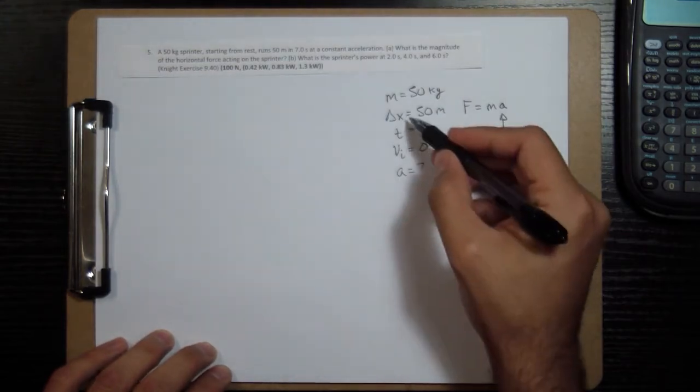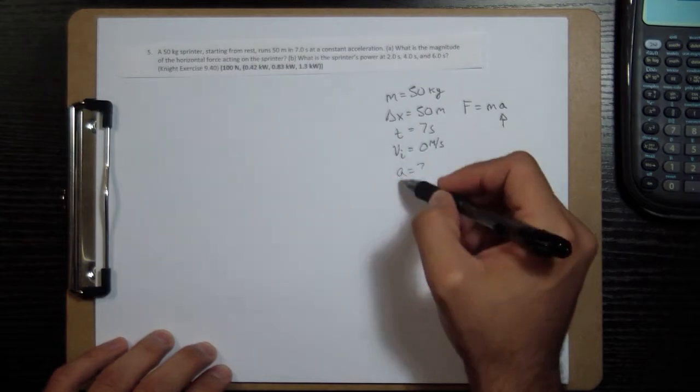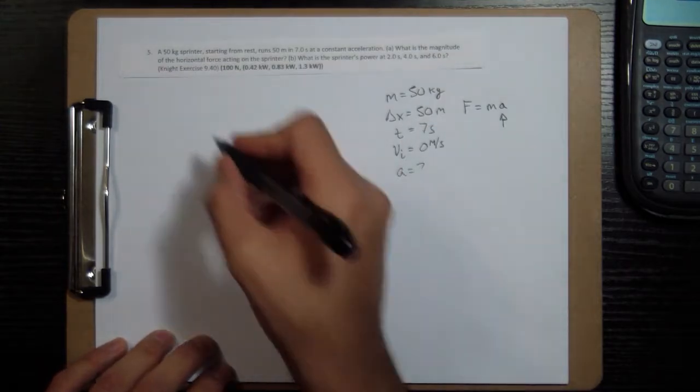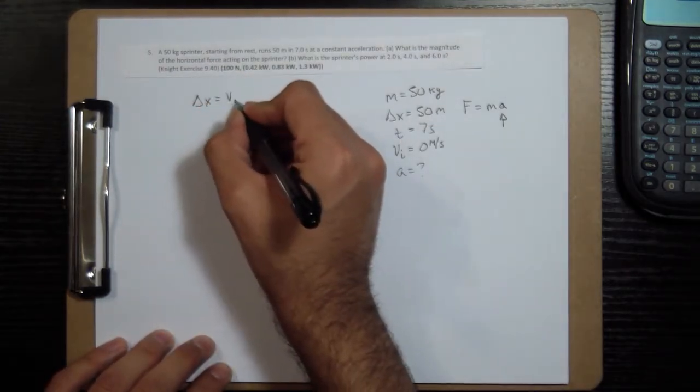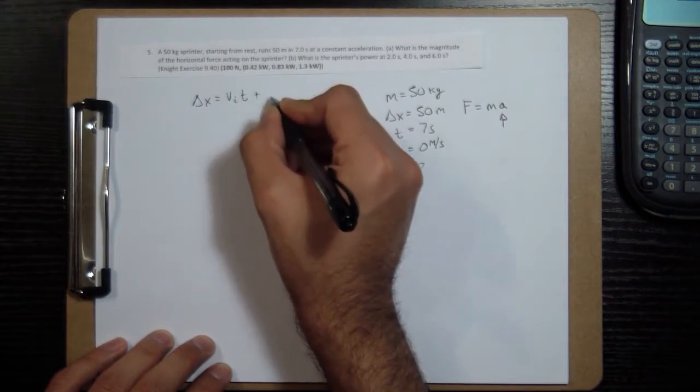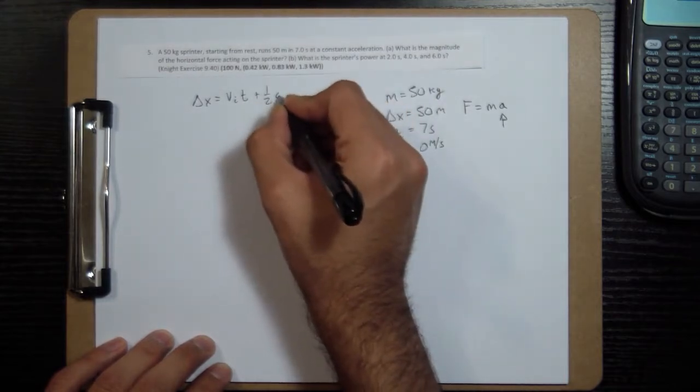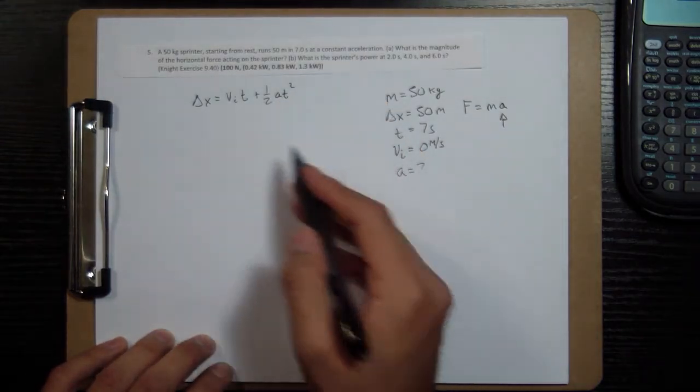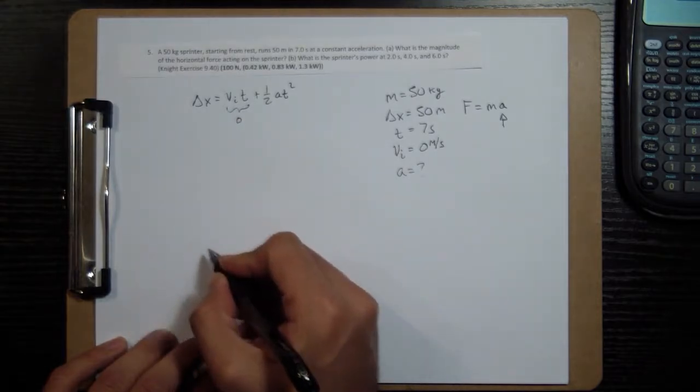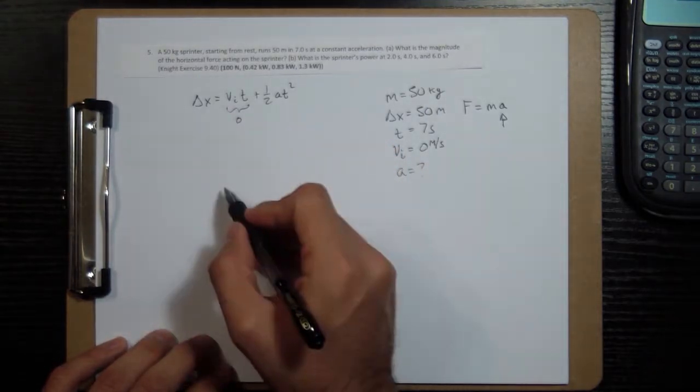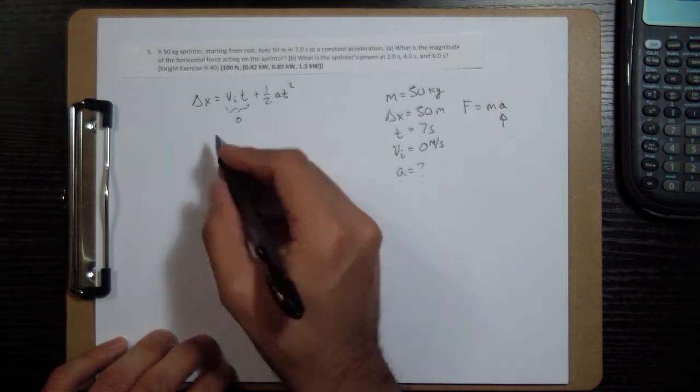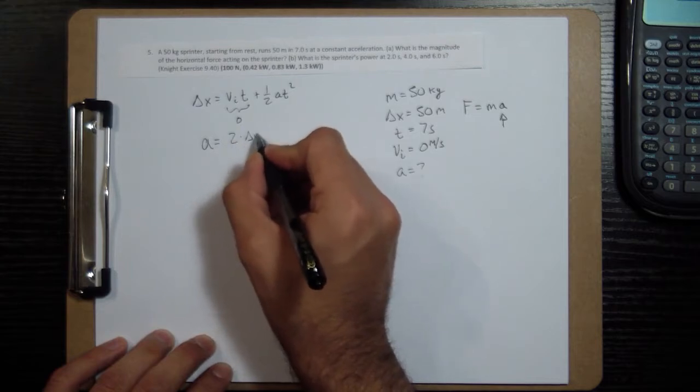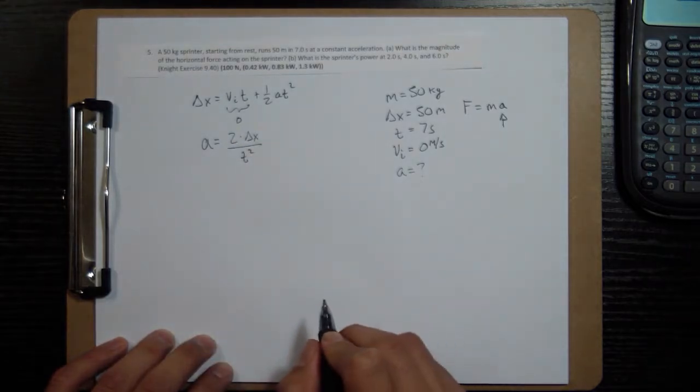And out of these, the equation that we can use is the one that doesn't have the final velocity. So that's delta x is equal to initial velocity times time plus 1 half a t squared. And it's very nice because the initial velocity is zero, so this term is going to be zero. And we're looking for acceleration, so we can isolate the acceleration. If you isolate acceleration, multiply by 2 and divide by t squared. 2 times delta x, divide by t squared.